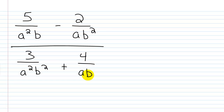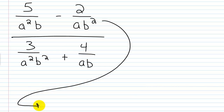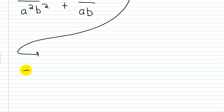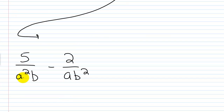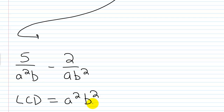Let's start by working on the numerator. I've got 5 over a²b minus 2 over ab². What's my LCD going to be? I have an a² here and an a here, so it's going to be a². Then I have a b here and a b² so it's times b². So a²b² is my LCD. I'm going to transform each rational expression into an equivalent one with a²b² as its denominator.